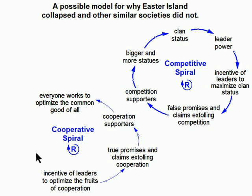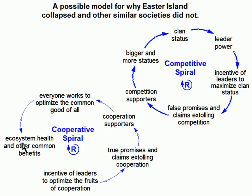How are we going to fill this gap? The problem we're modeling is environmental collapse, so we would want the system to optimize the health of the environment. So let's add this node. Everyone is working to optimize ecosystem health and other common benefits. Now all we've got to do is add our last two arrows, and we're done.